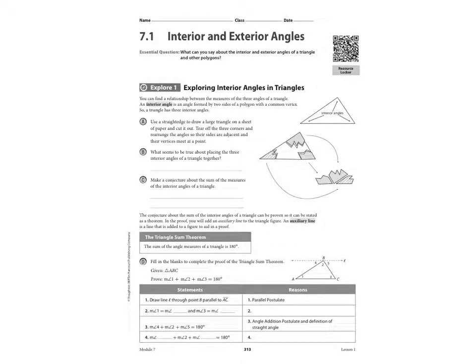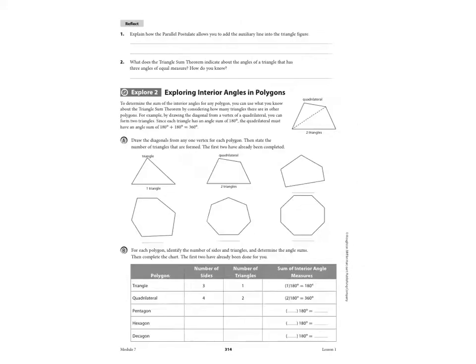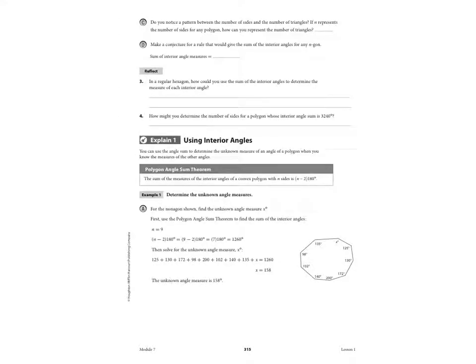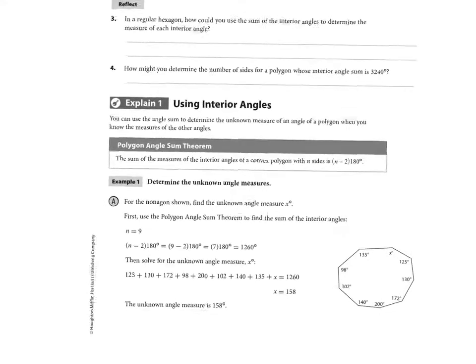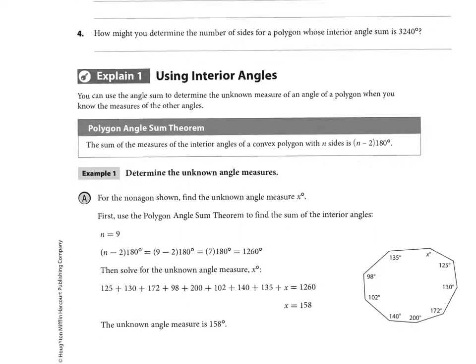Okay, so we're beginning 7.1, and we are going to go to page 315, and we are going to start there about halfway down, and we're going to talk about the polygon angle sum theorem.